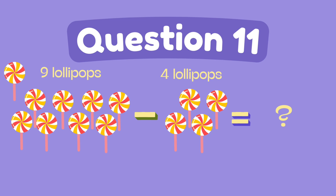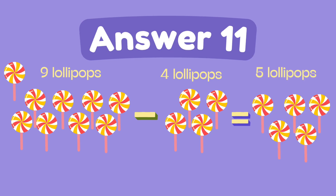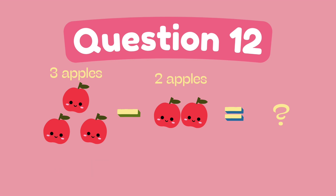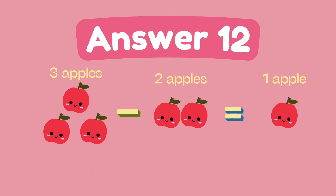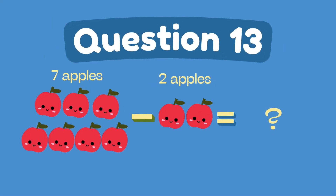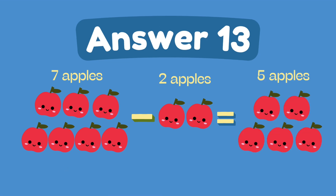What is nine minus four? The answer is five. What is three minus two? What is seven minus two? The answer is five.